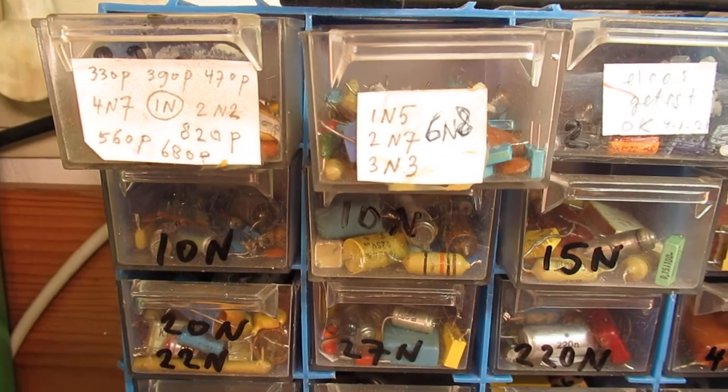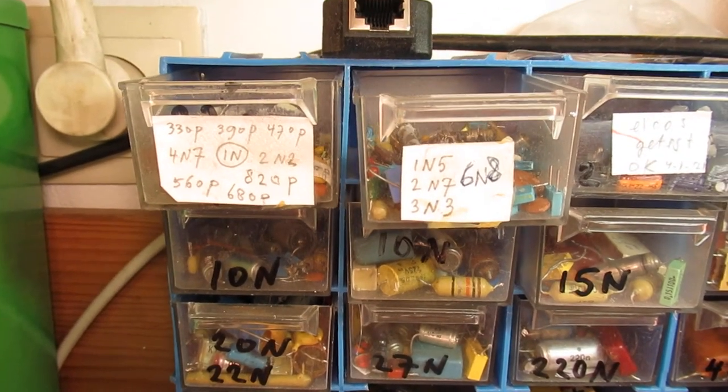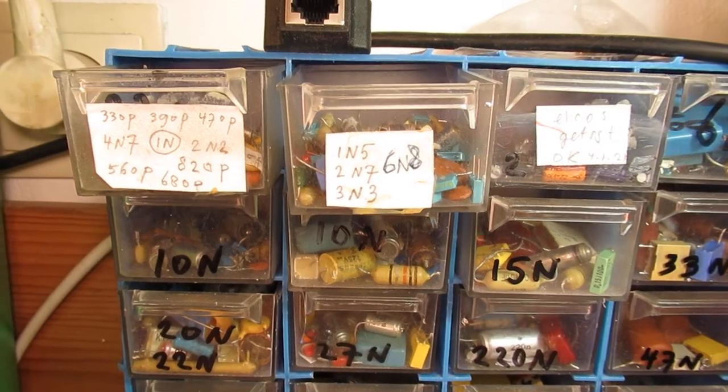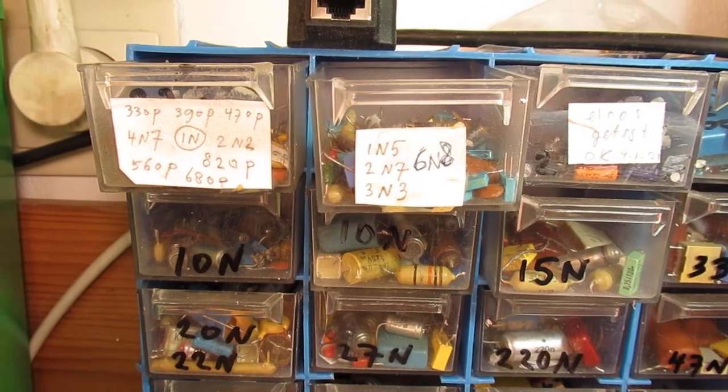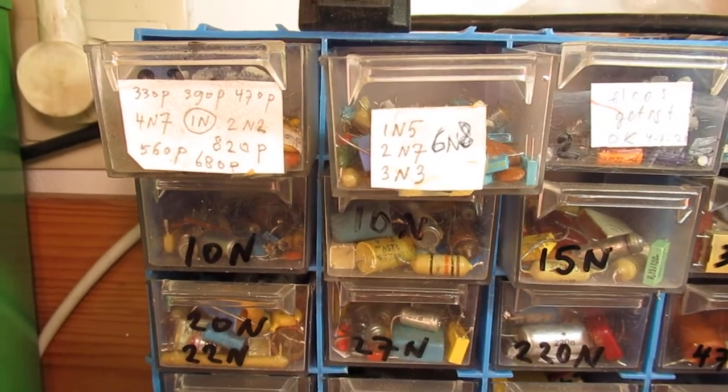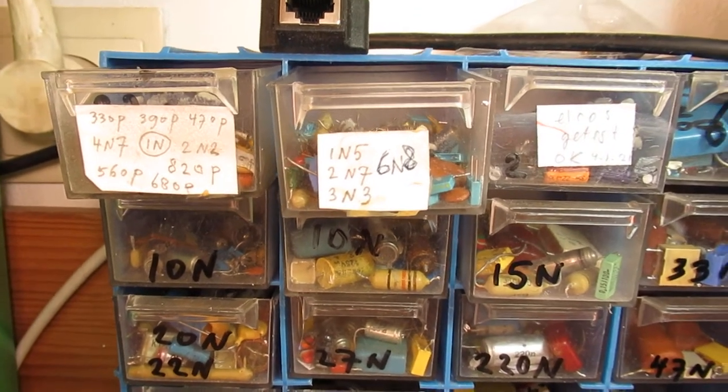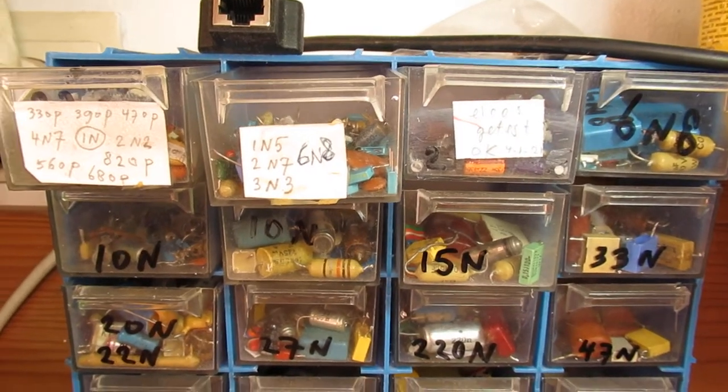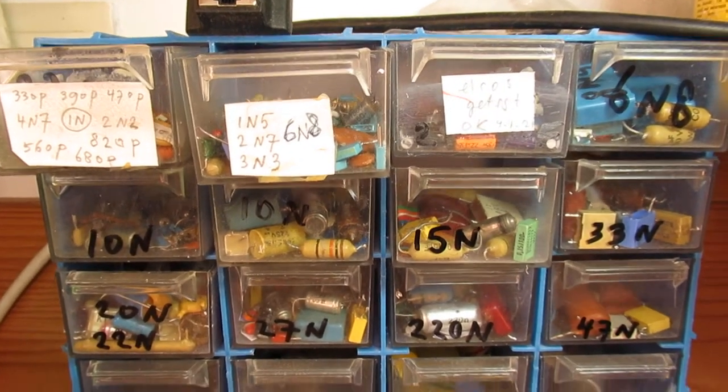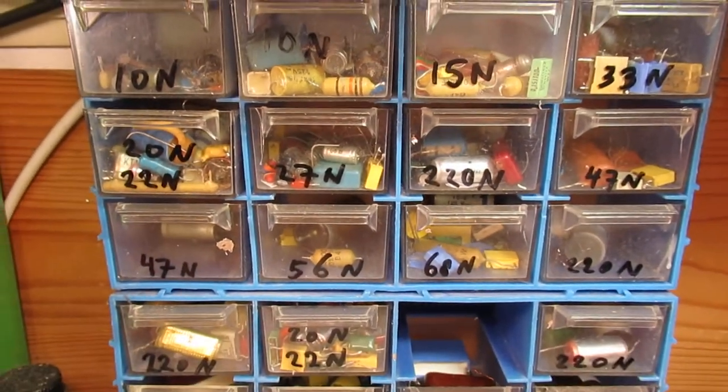And that means that you can also discriminate capacitors with a tolerance of 10 percent or even 20 percent to read out on the frequency counter their exact capacitance.